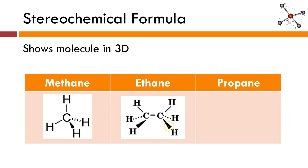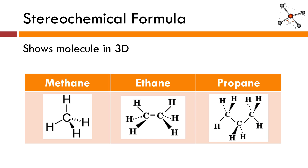In ethane, we've got two hydrogens sticking out at us, two hydrogen atoms pointing back into the screen, and two hydrogen atoms along with the two carbon atoms all in the same plane. Propane is represented a little bit differently — we're zigzagging now, which is a more realistic representation. The same idea applies: tetrahedral geometry around every carbon atom, with two atoms in the same plane, one jutting out at you, and one pointing away. Don't get too overwhelmed by this — I want you to be aware that stereochemical formulas exist, but this is not something I'm going to demand you use when drawing your structures.